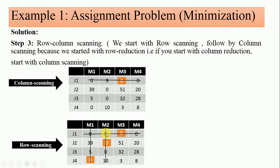Any other values will remain the same. Once again, when you want to form the next iteration table, check the smallest uncovered value. Out of 51, 20, 32, 28, 3, and 8 — those are the figures that no line passes through — the smallest among them is 3. Subtract it from all uncovered values: 3 minus 3, 8 minus 3, 28 minus 3, 32 minus 3, 51 minus 3, 20 minus 3.